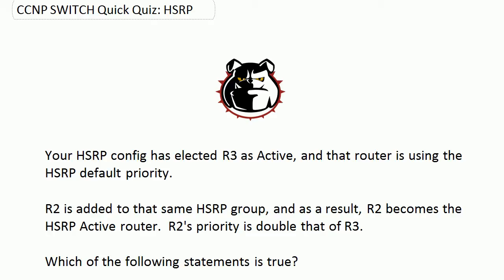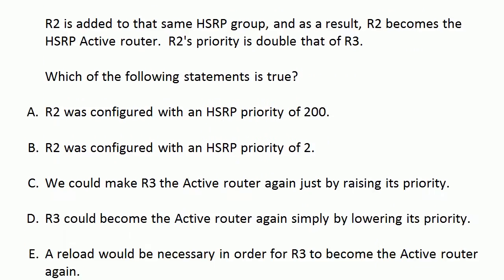Your HSRP config has elected router 3 as active, and that router is using the HSRP default priority. Router 2 is then added to that same group and as a result router 2 becomes the HSRP active router. Router 2's priority is double that of R3. Which of the following statements is true? Select all that apply.